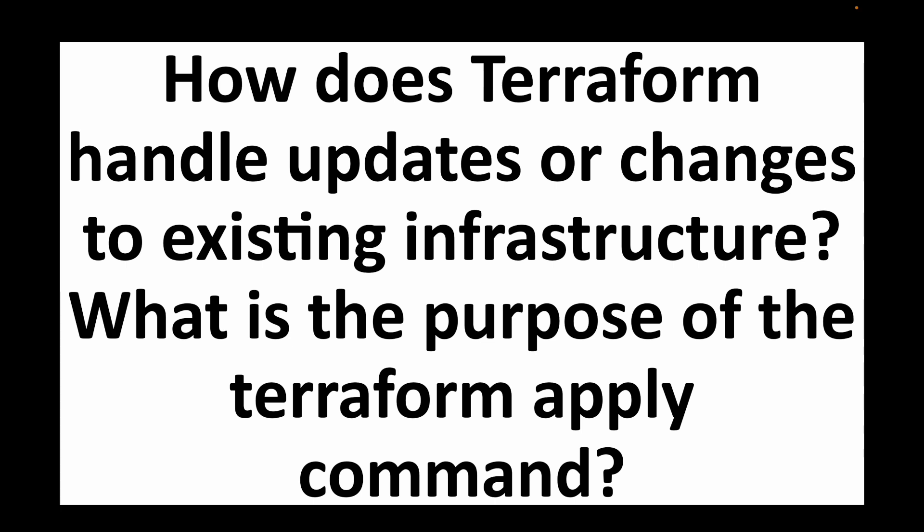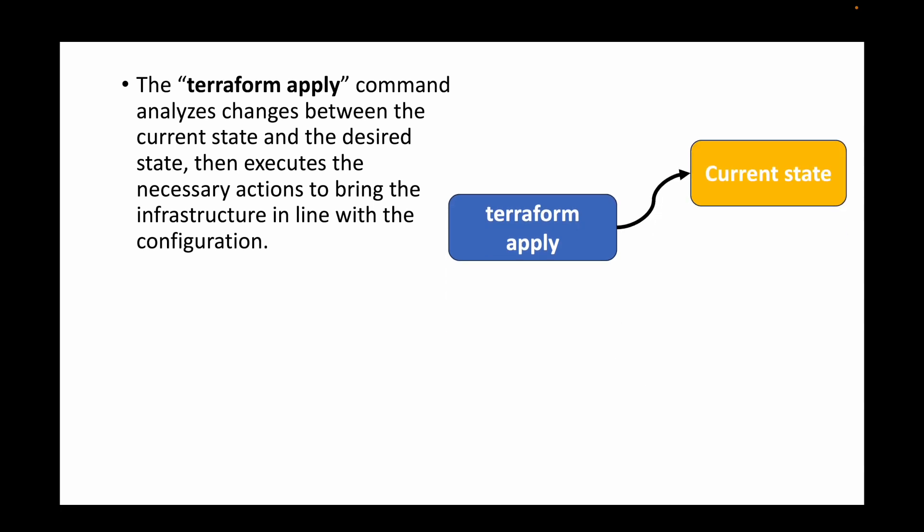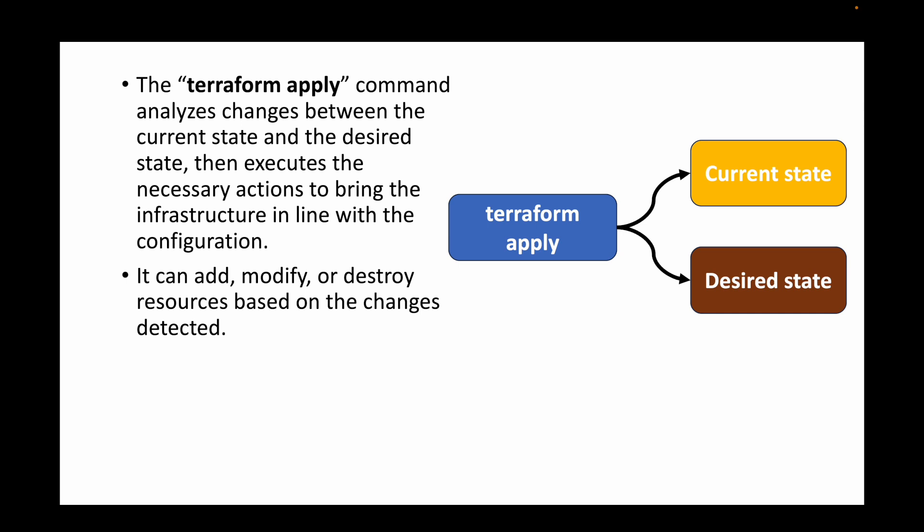The next question is: how does Terraform handle updates or changes to existing infrastructure, and what is the purpose of the terraform apply command? The terraform apply command is what we use to execute the configuration files. When we run it, Terraform analyzes the current state and the desired state, and whenever it finds differences, it takes the necessary actions to create or update that infrastructure. The terraform apply command can add, modify, or destroy resources based on the changes detected in the plan stage.